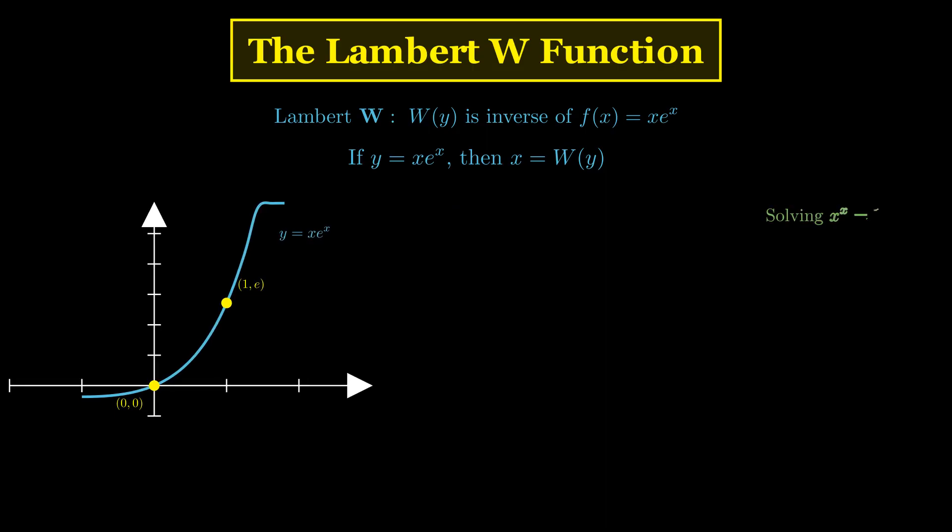Now let's see how the Lambert W function actually helps us solve x to the x equals 10. We start by taking the natural logarithm of both sides of the equation. This gives us x times the natural logarithm of x equals the natural logarithm of 10. Now comes the clever part. We massage this into the right form. Let's substitute u equals the natural logarithm of x. So x equals e to the power of u.